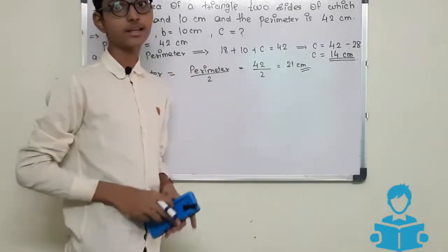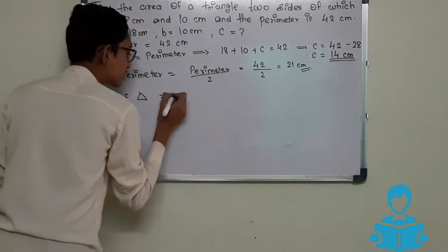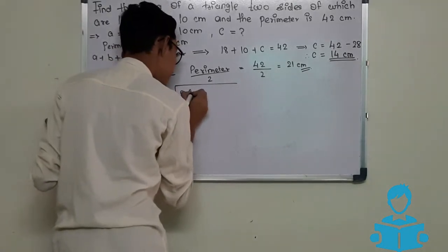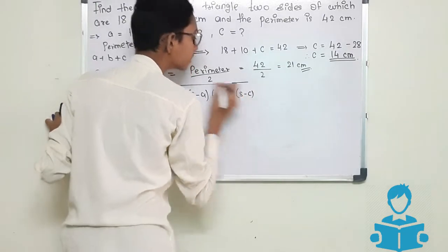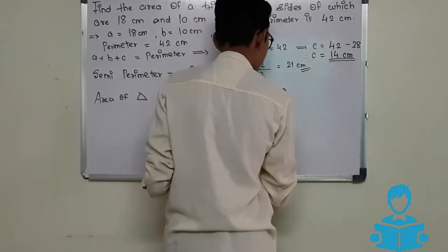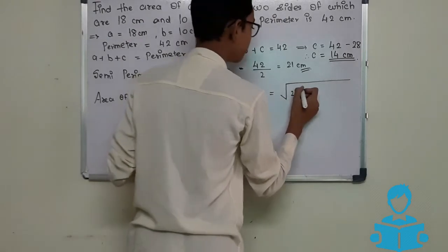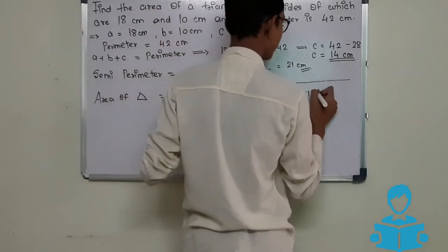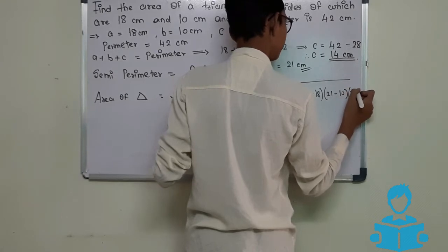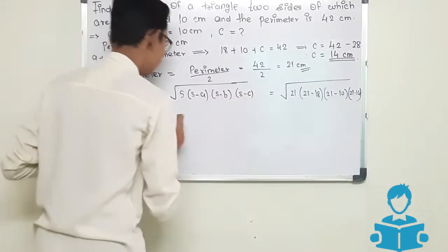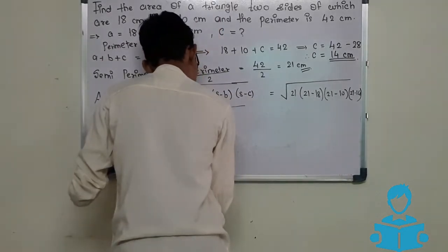Now we will find the area. Area of triangle equals under root of s multiplied by s minus a, multiplied by s minus b, multiplied by s minus c. Substituting: under root of 21 multiplied by 21 minus 18, multiplied by 21 minus 10, multiplied by 21 minus 14.